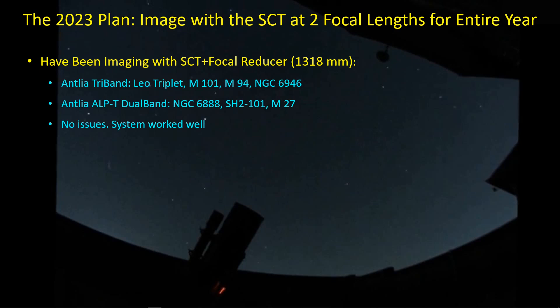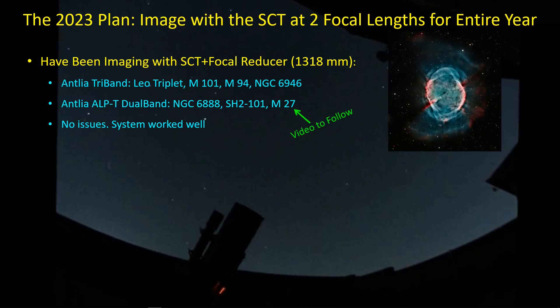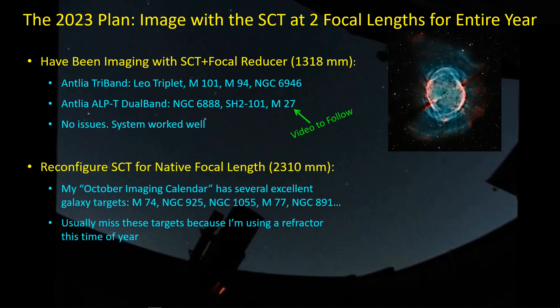The whole idea behind the imaging plan this year was to stick with the SCT for the full year. Start off with the C925 at roughly 1318 millimeters effective focal length with the focal reducer installed, take care of some of the big targets like the Leo Triplet, M101, M94, and so on, and then switch over to the Antlia dual band filter to pick up some SHO targets. Everything seemed to work pretty well, so the next thing I did was reconfigure the SCT back to the native focal length by removing the focal reducer.